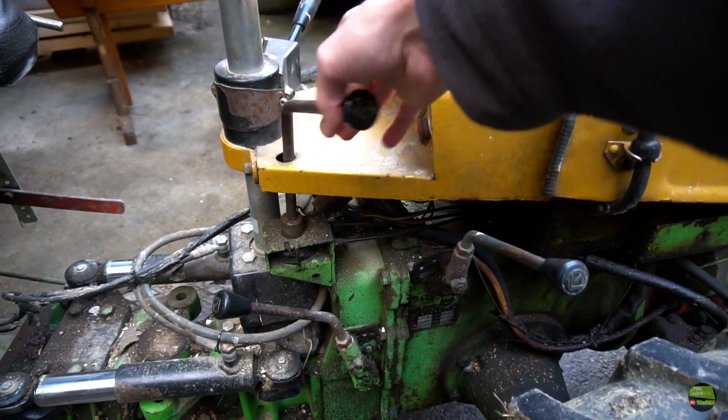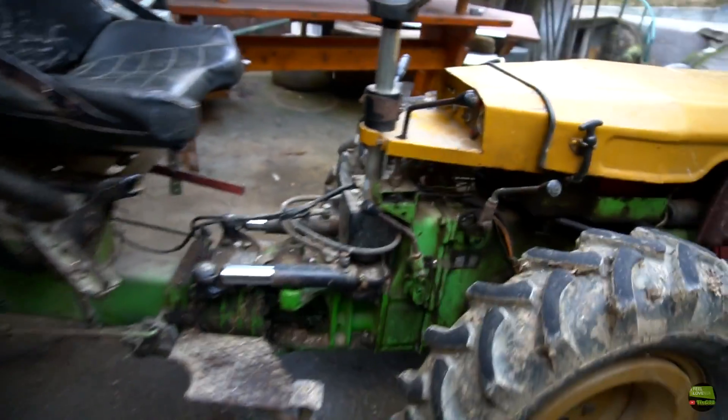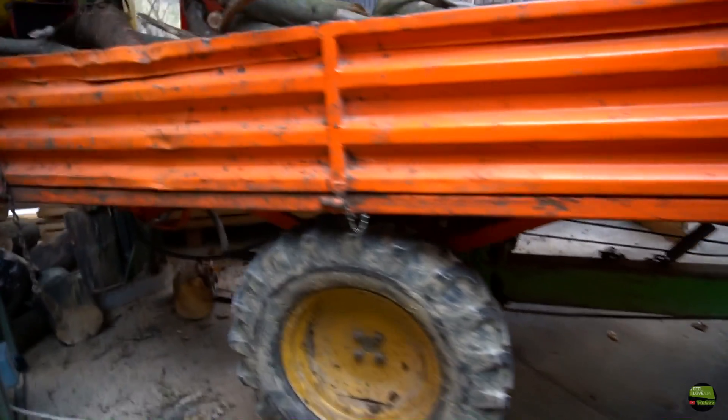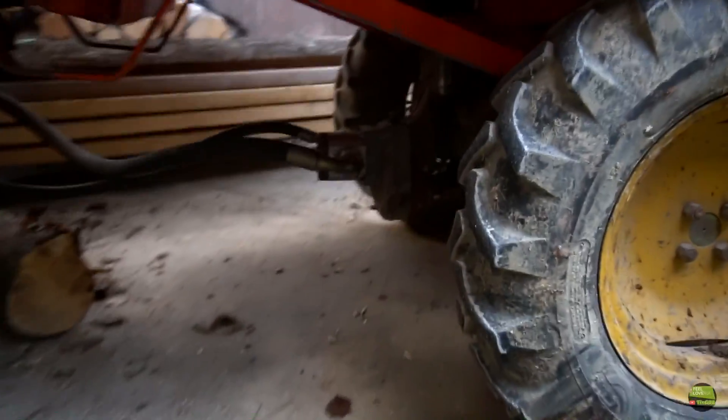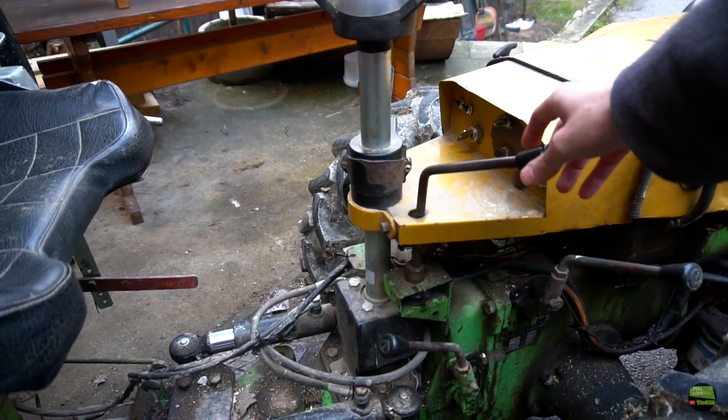That tractor's got hand throttle control, so when working with the splitter you just set the right RPM and work. But here and there comes some tough wood to split where we need more power. So we need to go to the front of the tractor, add a bit of throttle and continue to work. Then again come back and lower down the throttle to save on diesel and noise.